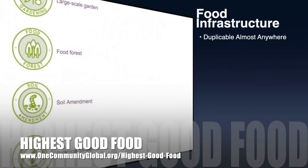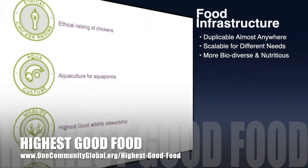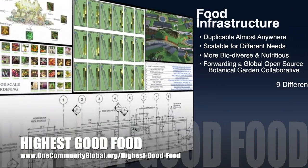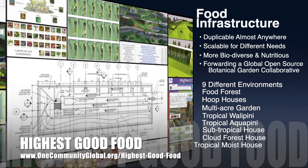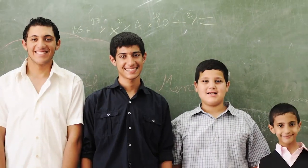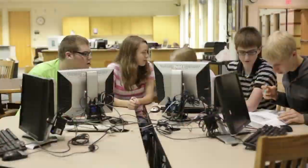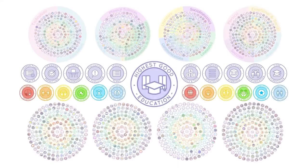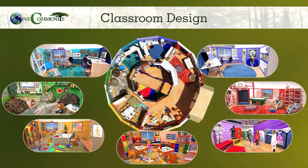One Community's approach to Highest Good Food is duplicable almost anywhere, scalable for different needs, more biodiverse and nutritious, part of forwarding a global open source botanical garden collaborative, and includes nine different free shared and duplicable growing environments. The Highest Good Education component is complete and pretty much ready to launch once on the property — designed for all age groups, adaptable to any schooling environment, inspiring and fun, and includes national standards, all subjects, lesson plans, teaching strategies, learning strategies and tools, classroom design, and more.